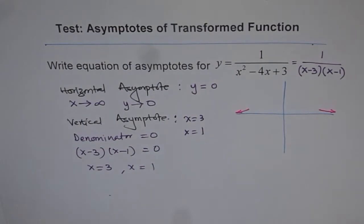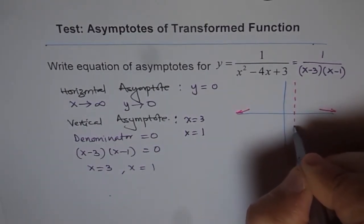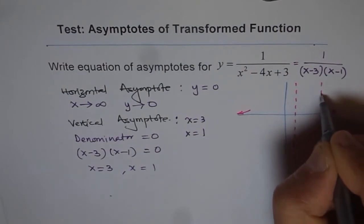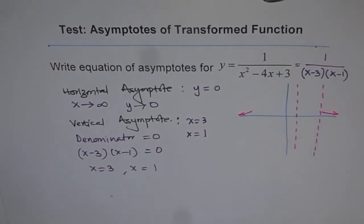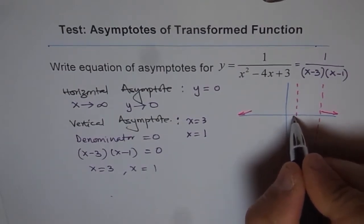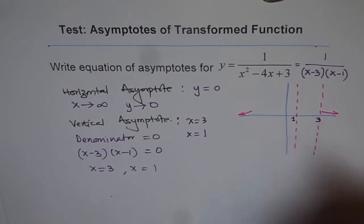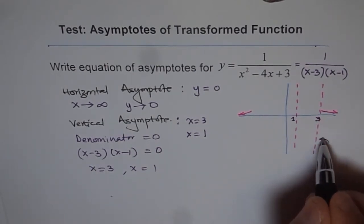Let's draw the vertical asymptotes. This is the vertical asymptote at x equals 1, and this is the vertical asymptote at x equals 3. So we have vertical asymptotes at 1 and at 3.